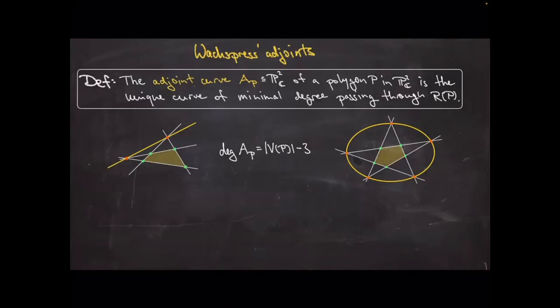Now let me define the adjoint. It's easiest to understand for polygons. The adjoint curve of a polygon is the unique curve of minimal degree that passes through all the outside intersection points — the residual points. If you have a polygon, you extend all the edges to get infinite lines, and new intersection points appear outside. For a quadrangle you get two outside points giving an adjoint line, and for a pentagon you get five points giving a conic.